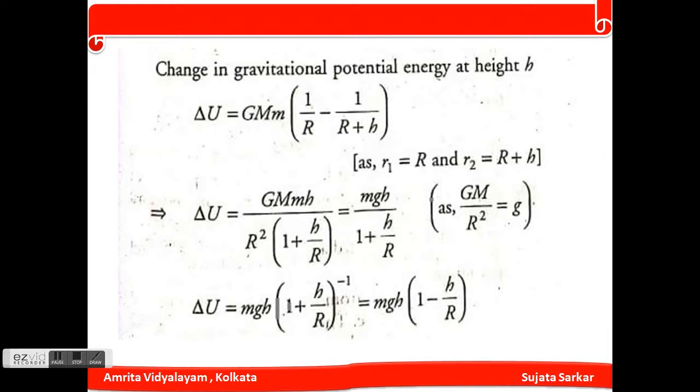So here GMmh divided by 1 plus h by R, or we can say GMmh times 1 by 1 plus h by R inverse. So we can write that after expansion, GMm times 1 minus h by R.